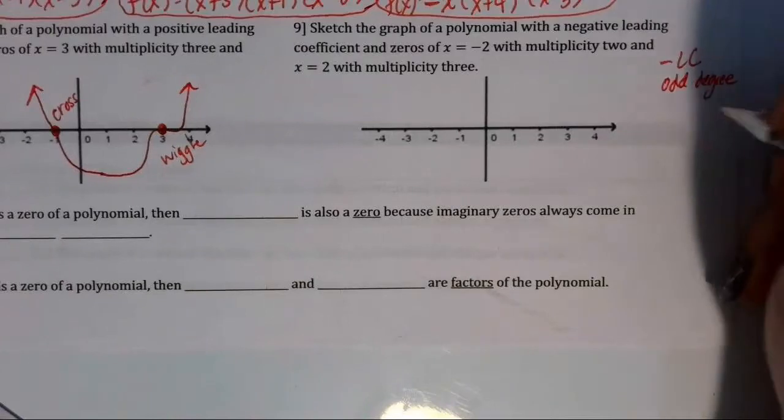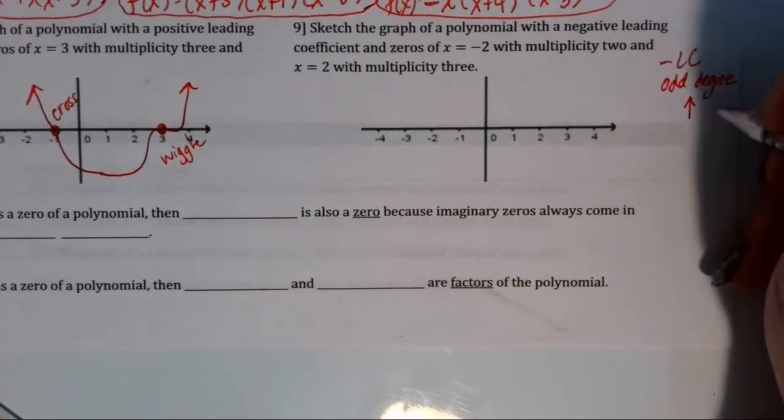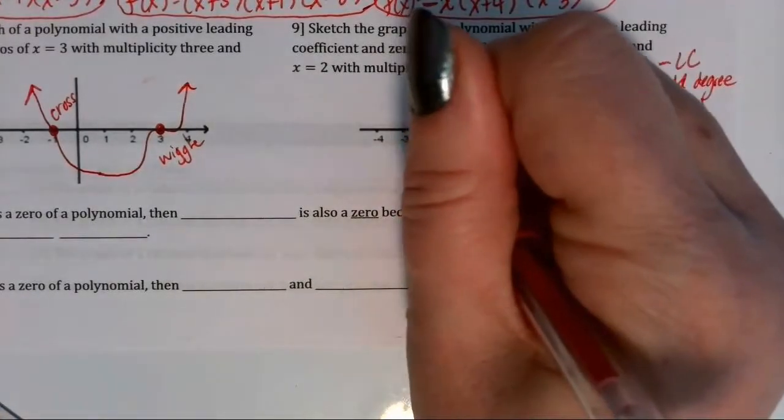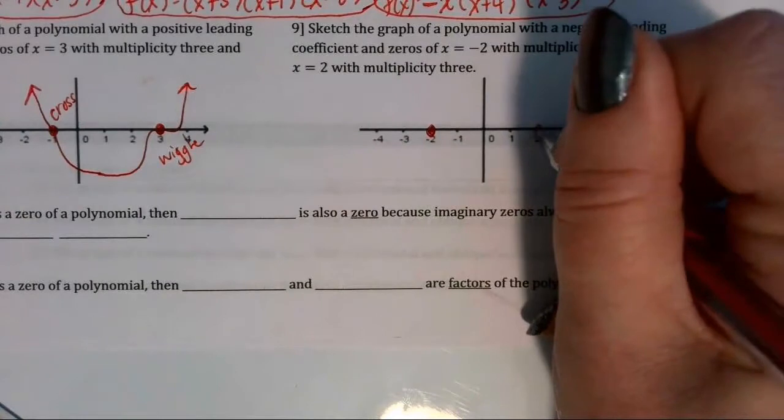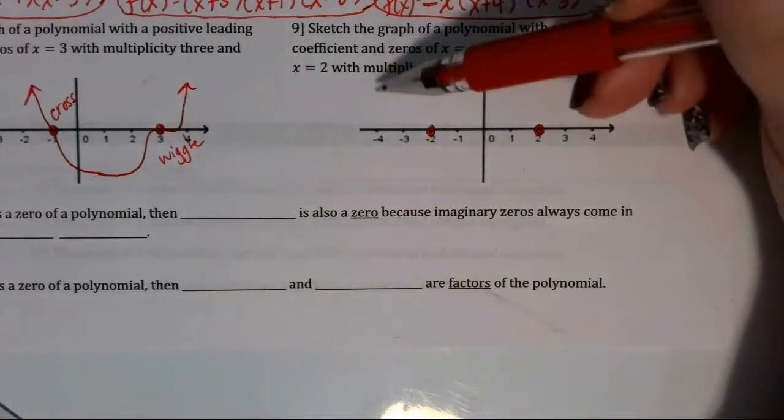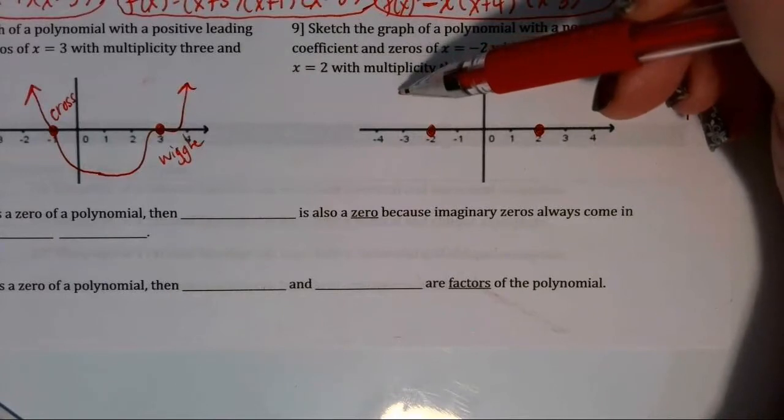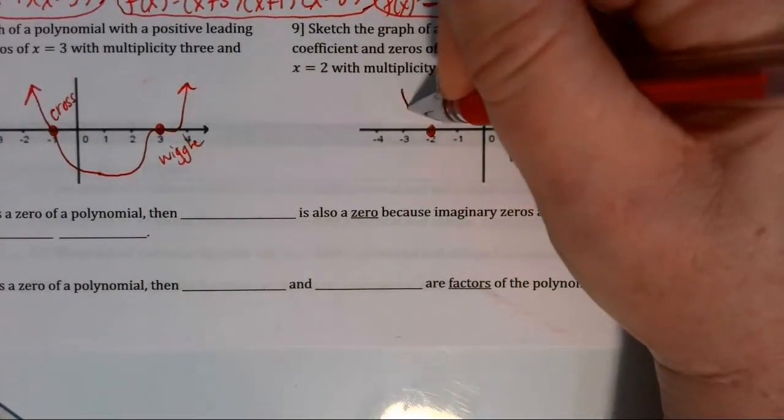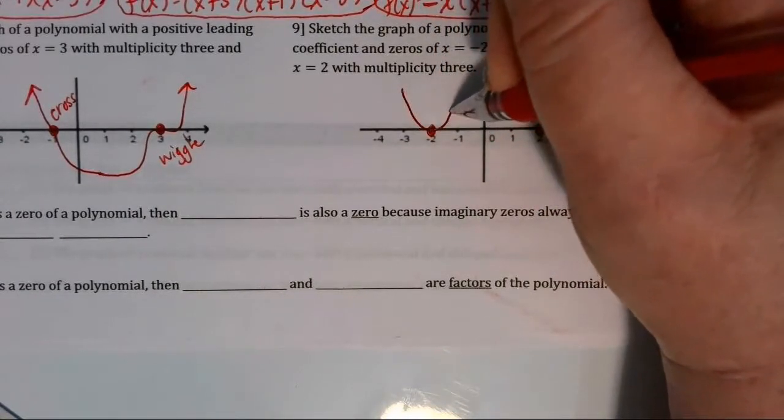So I know that my ends are going to start up on the left and end down on the right. And then my zeros are at negative 2 and at positive 2. I have to start up on the left, so I'm up here, and that negative 2 has multiplicity of 2. So it has to start up and bounce at negative 2.